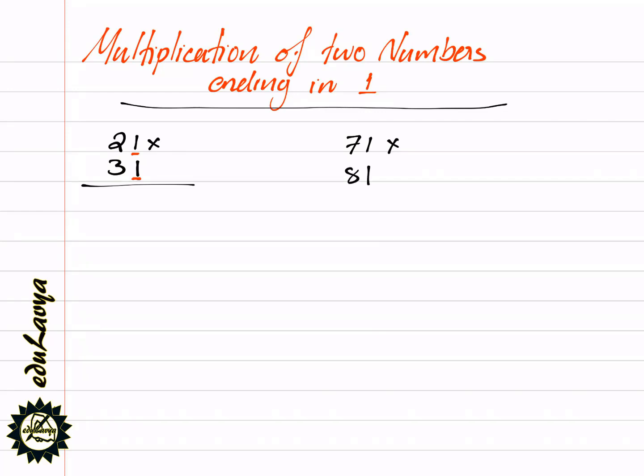Unit place digit is 1. Unit place is 1. Once place is 1. Unit place is 1.